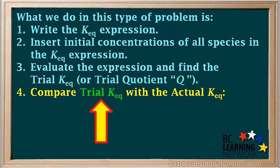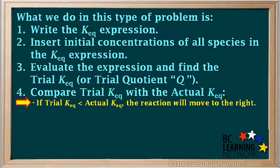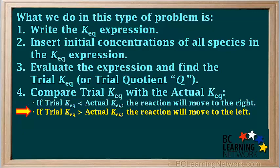Next we compare the value for the trial Keq, or Q, with the value for the actual Keq, which will be given to us in the problem. If trial Keq is less than the actual Keq, this means that the ratio of products to reactants is less than it needs to be at equilibrium — too low — so the reaction will have to move to the right in order to increase this product-to-reactant ratio. If trial Keq is greater than the actual Keq, this means the ratio of products to reactants is too high, so the reaction will have to move to the left in order to decrease the product-to-reactant ratio.